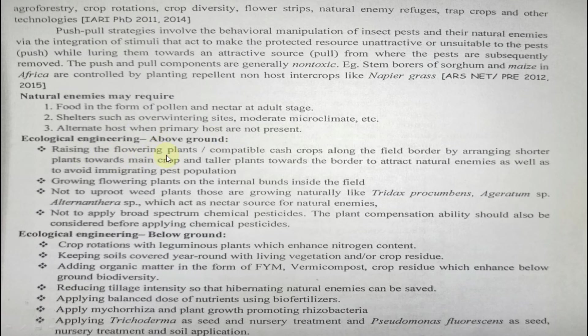For above-ground ecological engineering, flowering plants compatible as cast crops can be raised along the field border — arranging shorter plants towards the main crop and taller plants towards the border to attract natural enemies and manage pest immigration. When pests enter, they first go to the taller border plants; natural enemies then colonize and feed on the pests. Growing flowering plants on internal bunds inside the field encourages natural enemies like coccinellids. Weed plants growing naturally such as Tridax and Ageratum should not be uprooted as they act as nectar sources for natural enemies.